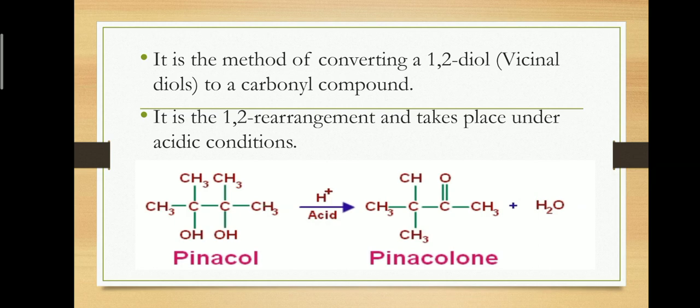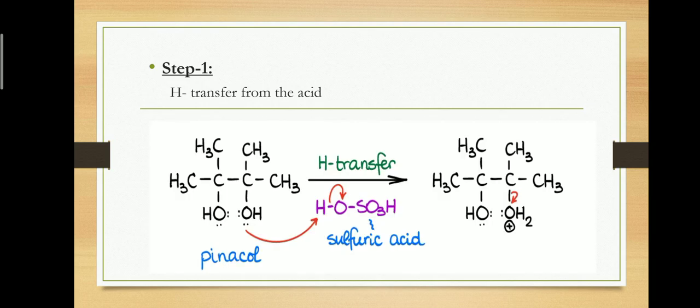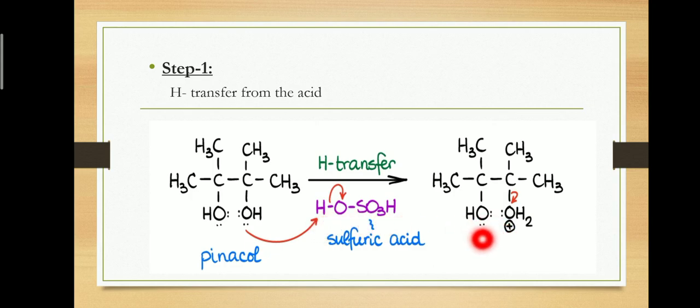Now let's see it in detail. The first step is the hydrogen transfer from the acid — that is, abstraction of a proton. The alcoholic functional group, the OH, abstracts a proton from the acid and forms an adduct.